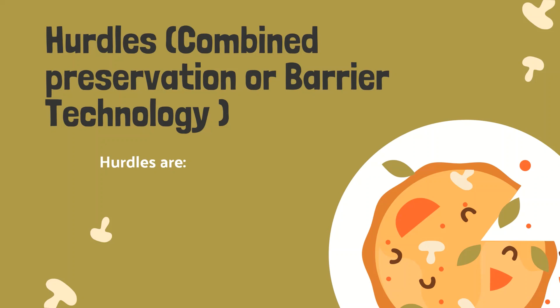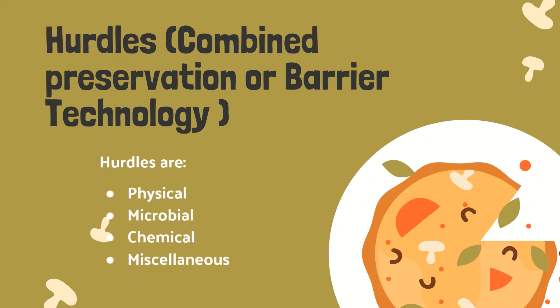There are four types of hurdles. Physical, which includes high and low temperature, high and low pressure, and different radiations. Microbial includes the competitive flora and antibiotics. Chemical includes salt, smoke, phenols, acids and other chemical compounds. And miscellaneous includes the free fatty acids and chitosan-related compounds.